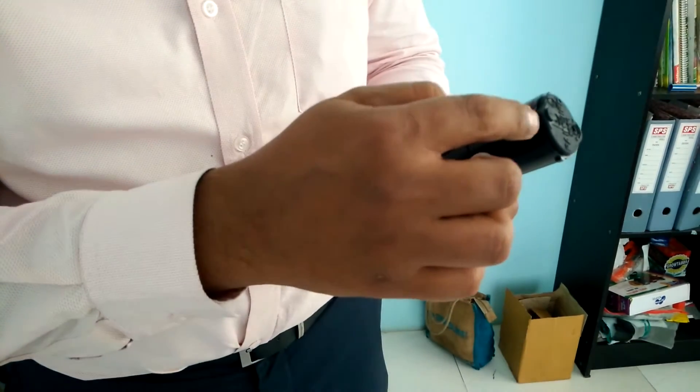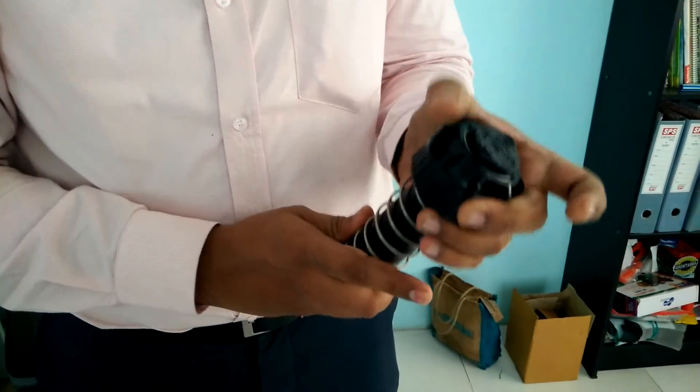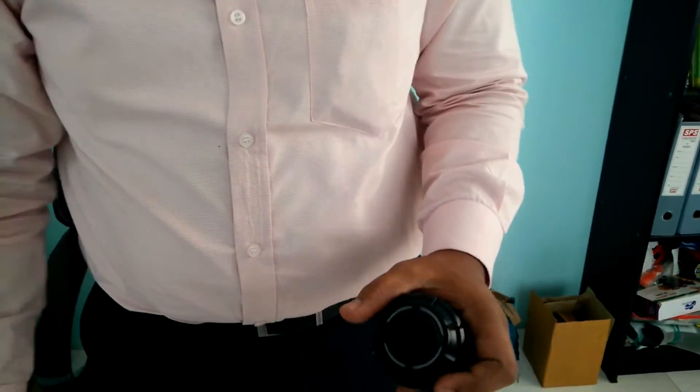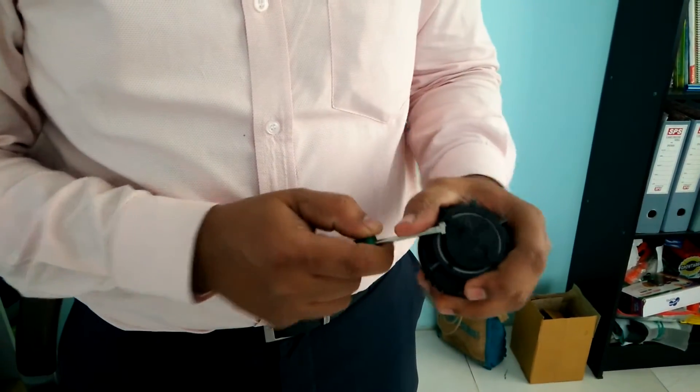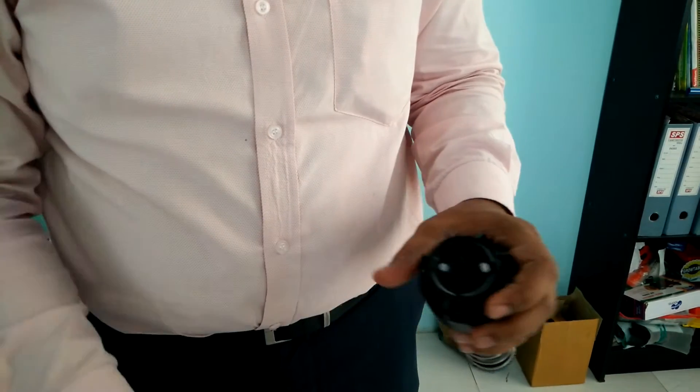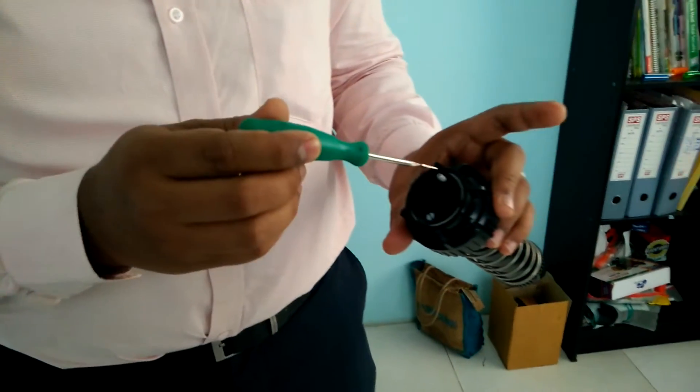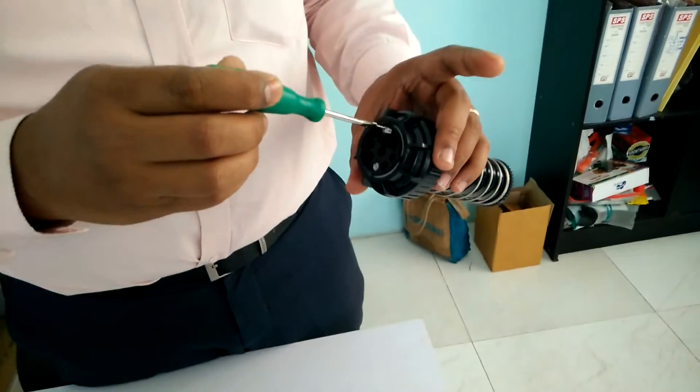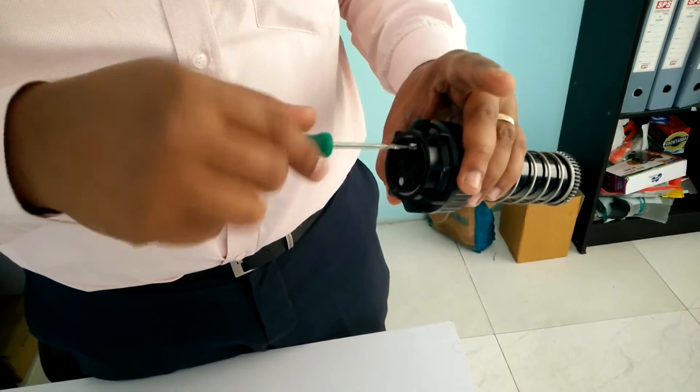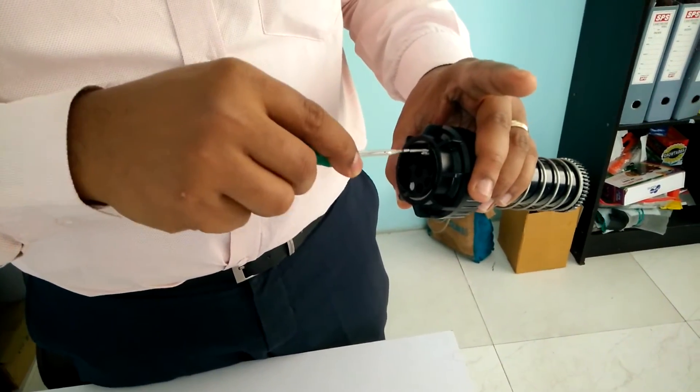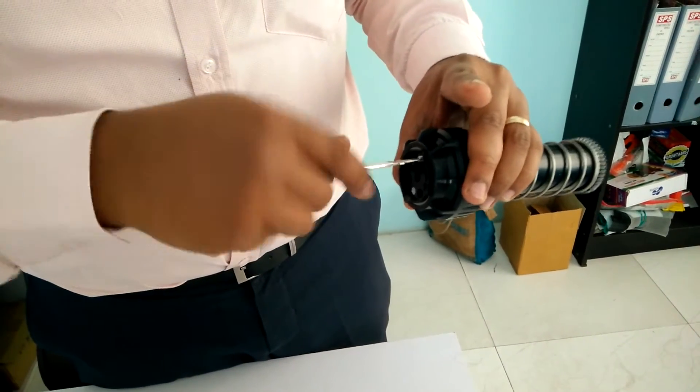Then you have to tighten one screw. For easy understanding, I will open it like this. Here you can see one screw. This screw is to keep the nozzle in the nozzle slot. So you tighten it, the nozzle will be fixed. When the water pressure comes, it will not come out.